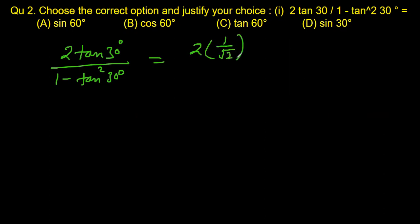And this divided by 1 minus tan square 30, again 1 by square root 3, and square of this.